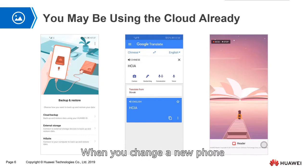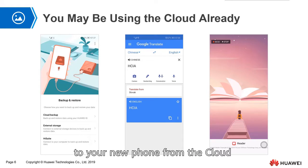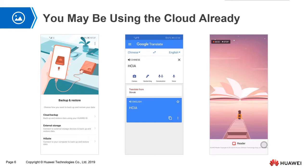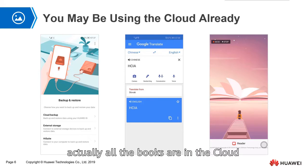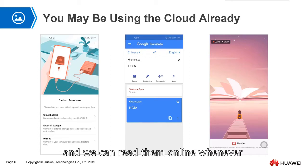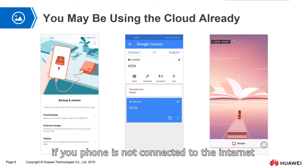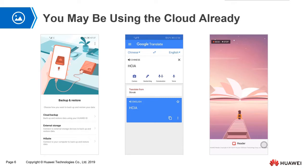When you change to a new phone, the information can be downloaded to your new phone from the cloud. When we use a reader application, all the books are in the cloud, and we can read them online whenever we want. If your phone is not connected to the internet, you can't open them.